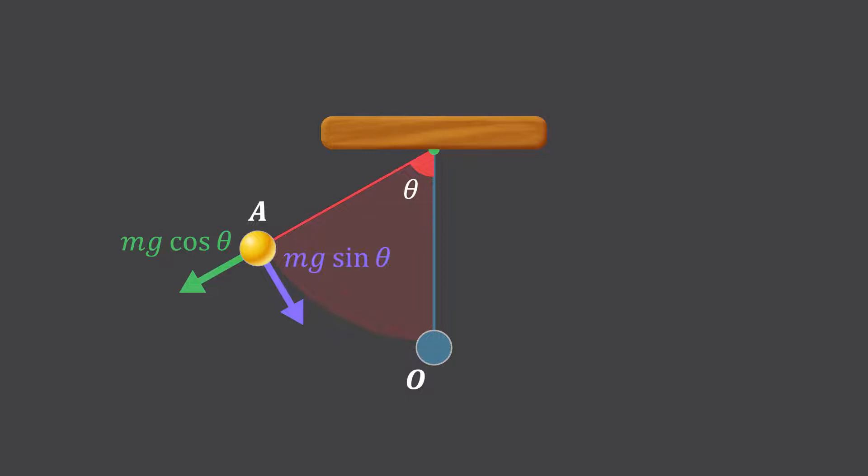The force mg cos θ is cancelled out by the tension in the string as the tension acts in its opposite direction. Finally, what remains is the force mg sin θ that pulls the bob towards the mean position. This makes the bob move towards the mean position O.